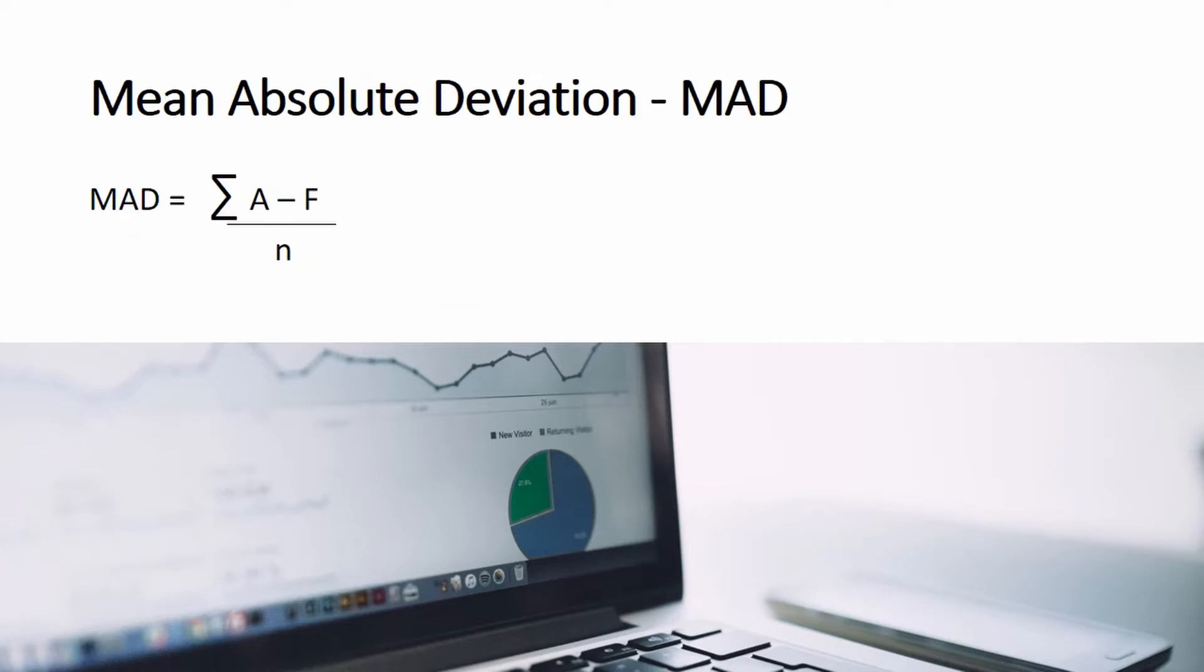For mean absolute deviation, we get the difference of the actual data and the forecast. We disregard the sign because we focus on the magnitude of the error. The summation of the error is divided by n, or the number of data.